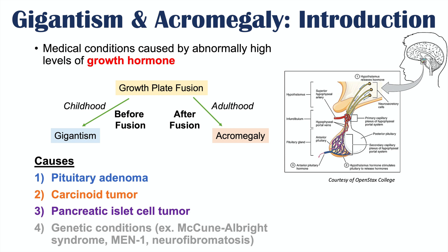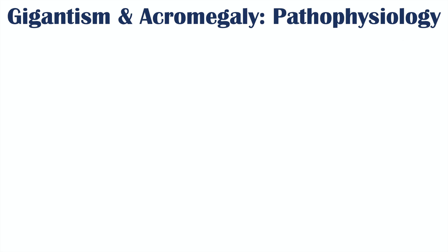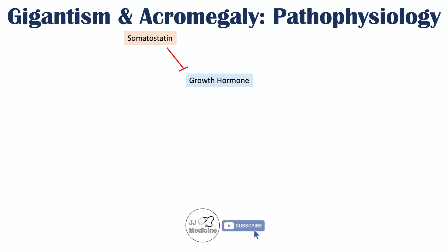Genetic conditions associated with these disorders include McCune-Albright syndrome, MEN1 (multiple endocrine neoplasia 1), and neurofibromatosis. Regarding pathophysiology, growth hormone is released from the anterior pituitary and regulated by hypothalamic hormones. Somatostatin is an inhibiting hormone from the hypothalamus that inhibits growth hormone, while growth hormone releasing hormone (GHRH) from the hypothalamus causes growth hormone release from the anterior pituitary.